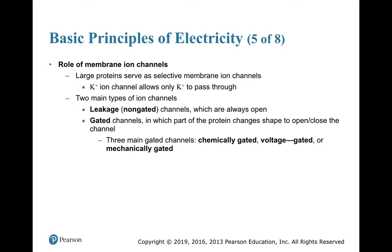There are two major types of ion channels. The first is a leakage channel — a non-gated channel that is always open, and that type of ion, potassium or sodium, will move through it. The second important type is a gated channel. In a gated channel, you can't get through until it is opened. There are three major ways these channels control their gates — whether they're open or closed — and that is chemically gated, voltage gated, or mechanically gated.